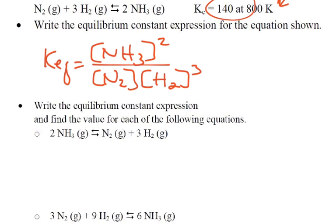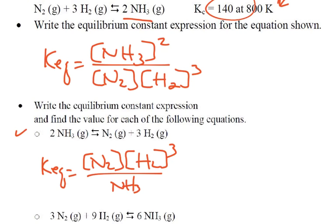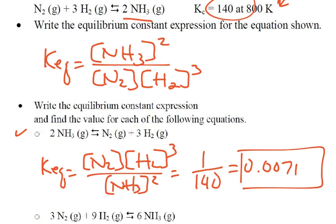Now we want to just write the equilibrium constant expression and find the value for each of the following. So now we'll look at this one and say, how is this equation different than the one before? We can see we have 2NH₃, we have N₂, H₂, so this is just the reverse. So if that's the case, then my K_EQ is going to be the concentration of N₂ times the concentration of H₂ cubed over NH₃ concentration squared. So we can see I've flipped my equation, so that means this is going to be 1 over 140, which is 0.0071. So since we've flipped it around, then that gets the inverse of my original.